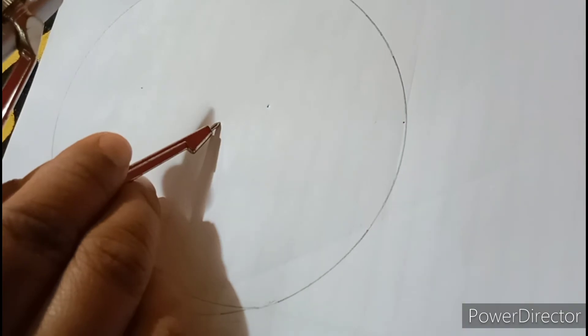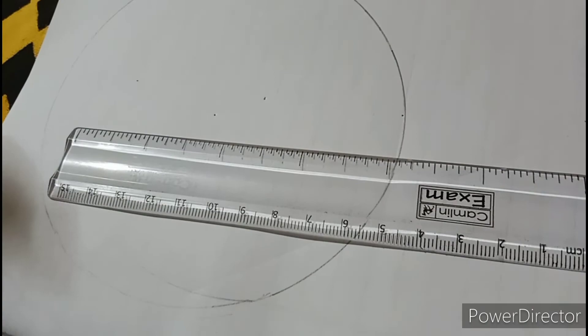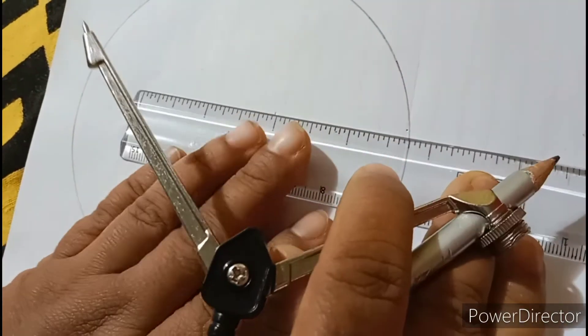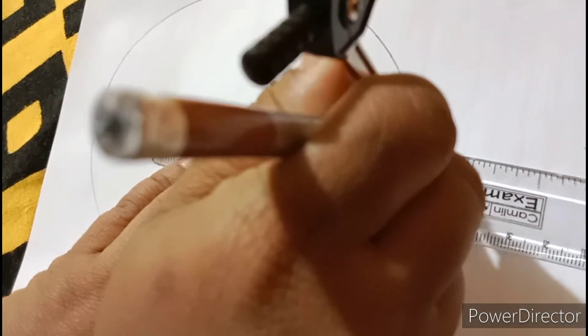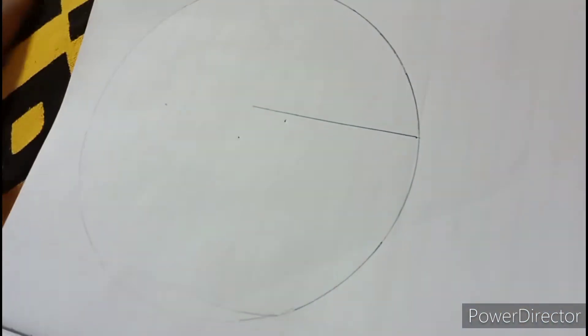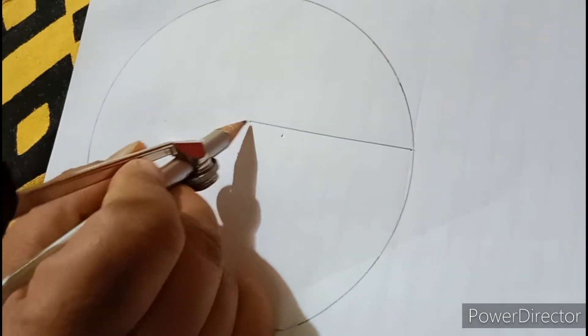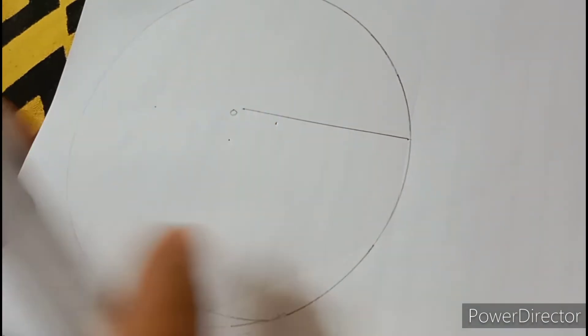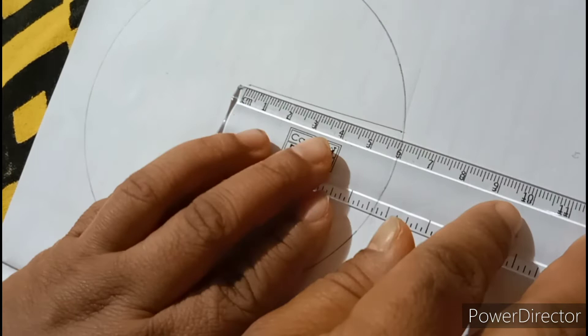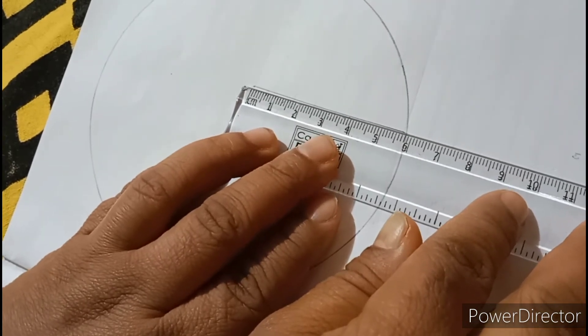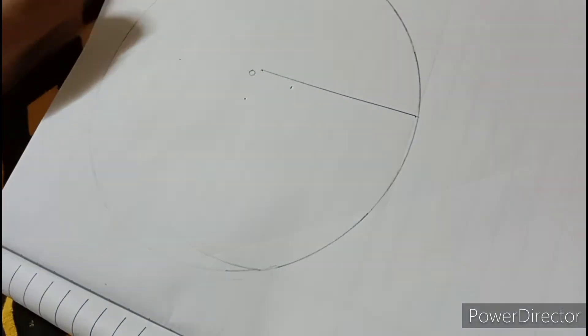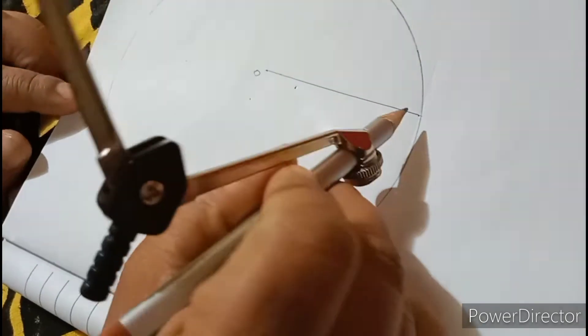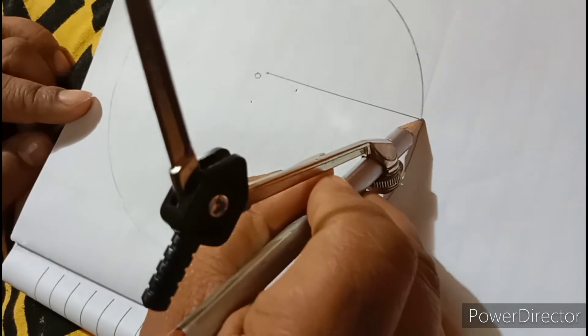Now, from here, draw a line of radius with the help of the pencil. Draw a radius. Now, this will be a center of the point. It should be 6. See? This is 6 cm. This point should be O.